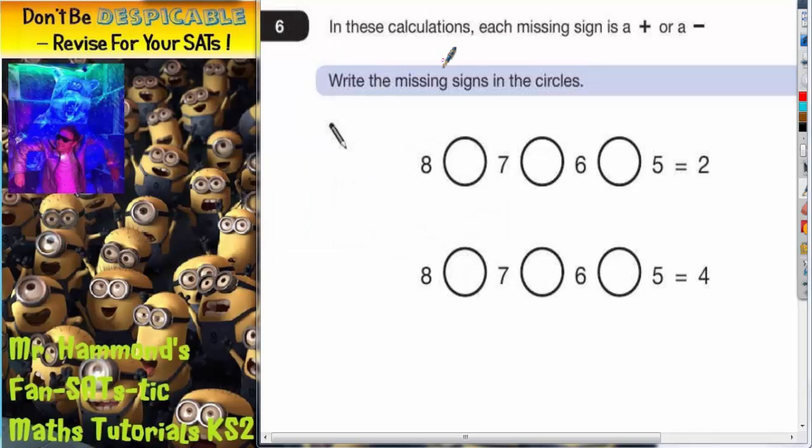Question 6. In these calculations, each missing sign is either a plus or a minus. That's what we've got to fill in here - plus or a minus in every little circle. Write the missing signs in the circles. Now, the important thing here is not to spend all day on this question, just to be systematic.